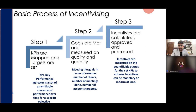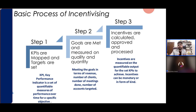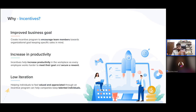On quantifiable measures, specific objectives should be mapped. That's step two: when KPIs are given to people and met, the incentives set by management are calculated, approved, and processed. So based on achieving the KPIs, the incentives come into the picture.